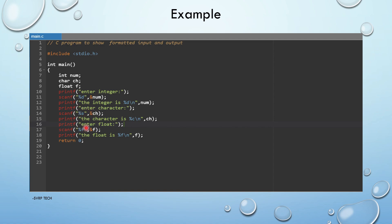Then we prompt "Enter float" and read a float value using %f, which is the format specifier for the float data type. After reading, we print that value to the console. Now let us see the output.